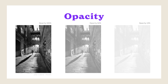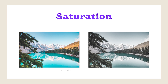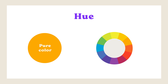Opacity can be applied to various design elements such as images, shapes, or text. When an element has a lower opacity, it becomes more transparent, allowing objects behind it to be partially visible — this can create interesting visual effects and layering in designs. Saturation refers to the intensity or purity of a color; it determines how vibrant and vivid a color appears. A highly saturated color is rich and intense, while a desaturated color appears muted or washed out. Hue refers to the purest form of a color, without any tint or shade added.